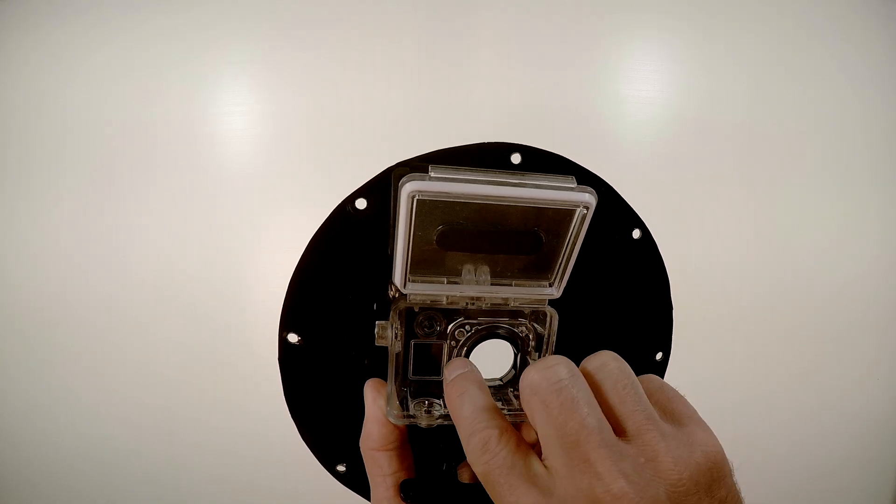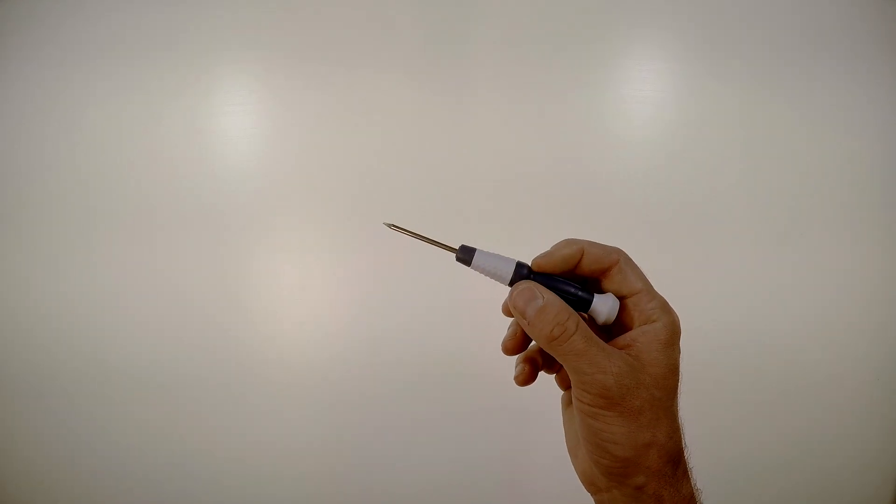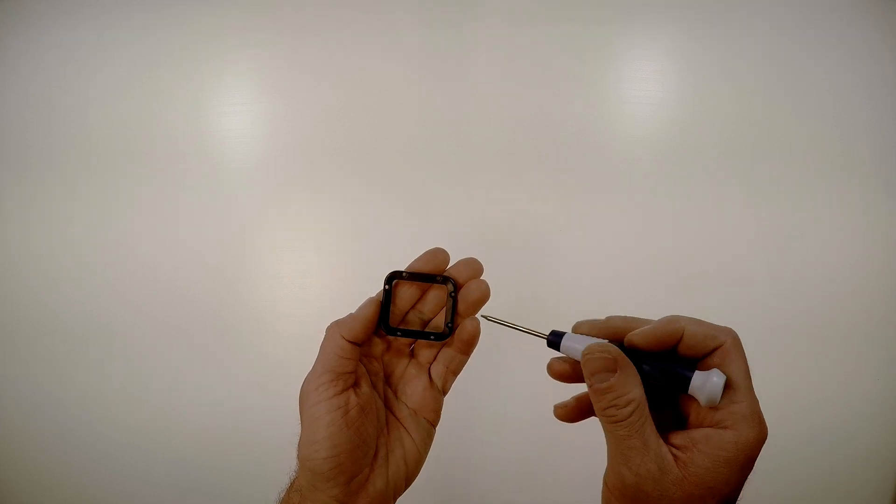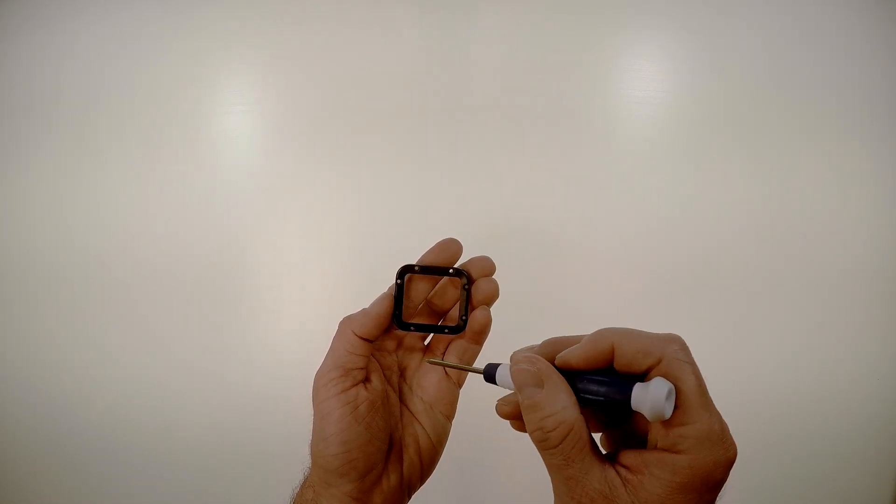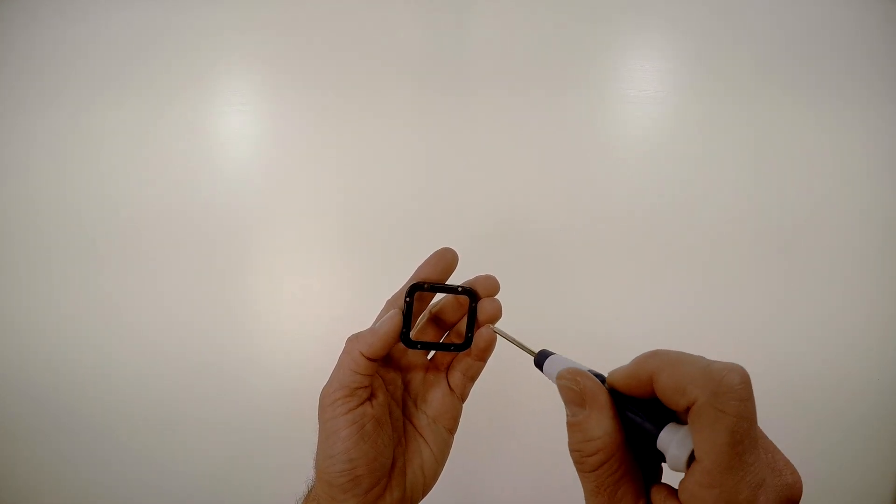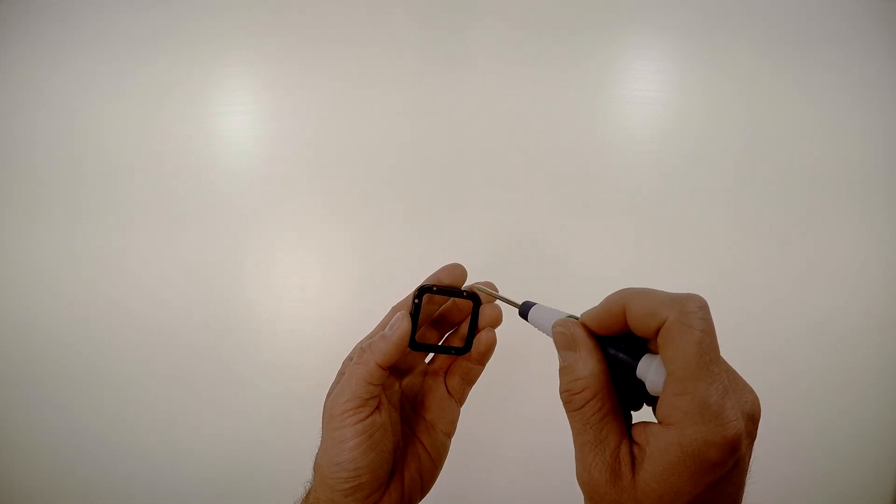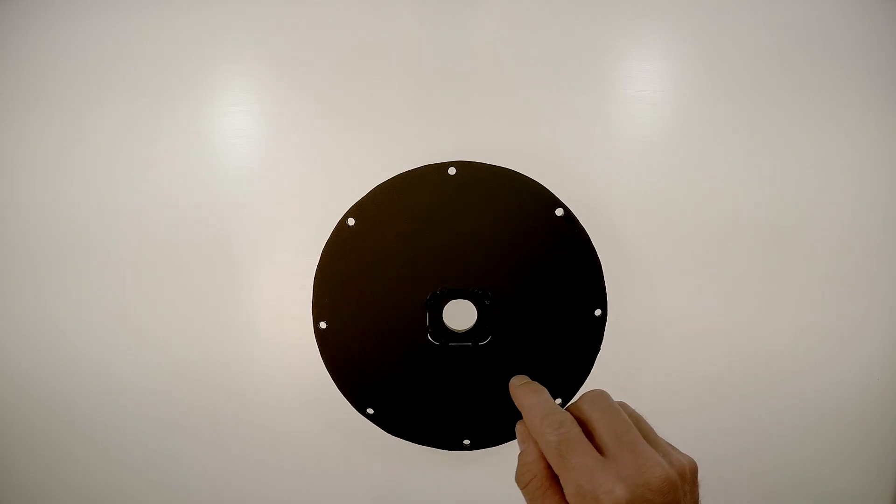The next step is to take your special GoPro screwdriver and remove the eight screws around the bezel and pull that off. Pretty easy, but just be sure you get a good grip on the screws and get them out without stripping them.